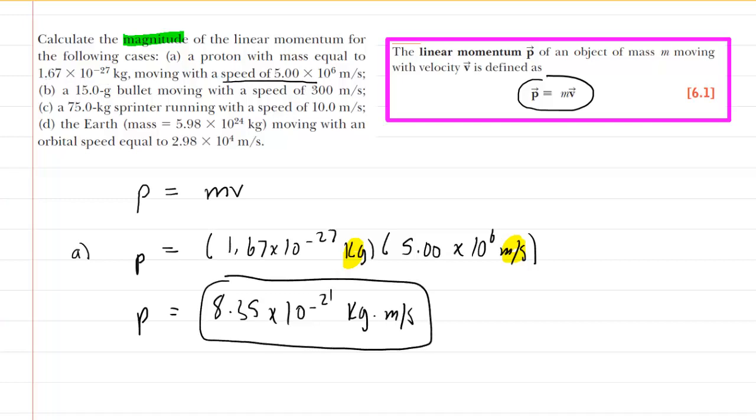Many of the rest of the questions will operate similarly. In part B, we do have to be somewhat careful because we are given the mass in grams. We're going to take the 15 grams and multiply it by 10 to the minus 3. That will convert it into the standard unit of kilograms. And then we'll multiply it by the given speed of 300 meters per second.